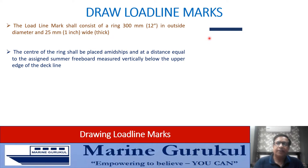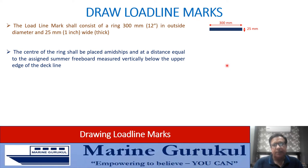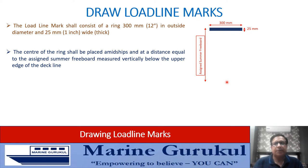The deck line is 300 mm in length, 25 mm in thickness, with its center amidships. From the upper edge of the deck line, coming down vertically a distance equal to the assigned summer freeboard of the ship gives us the center of the load line mark — and the load line mark, this circle or ring, is drawn there.